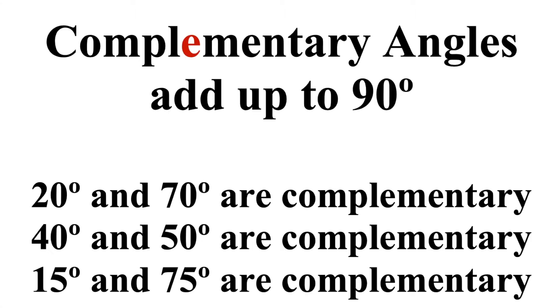Complementary angles are two angles that add up to 90 degrees: 20 degrees and 70 degrees, 40 degrees and 50 degrees, 15 degrees and 75 degrees, and so on. Cosine of 20 means the complement's sine, meaning the sine of 70.